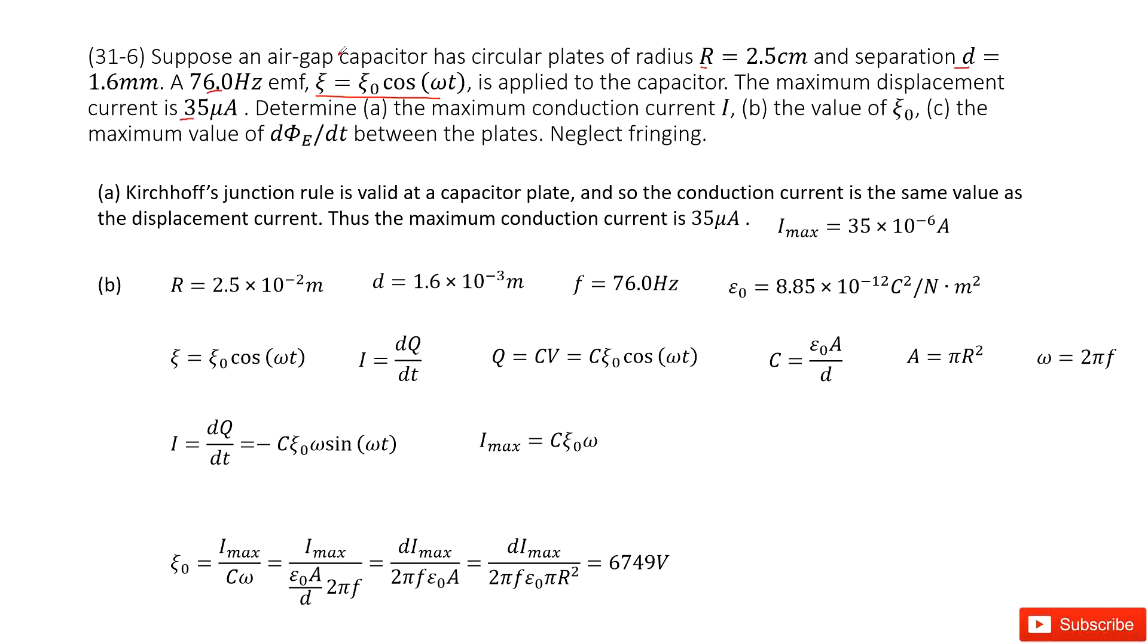And what is getting out? Using Kirchhoff's junction rule, maximum conduction current. So in this part, we can get the maximum conduction current I_max just equal to maximum displacement current.